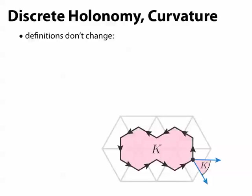How do we define things like holonomy and curvature in the discrete setting? Well, actually, because we were really careful to use the same terminology for our discrete setup as we had in the smooth case, our definitions don't really change.